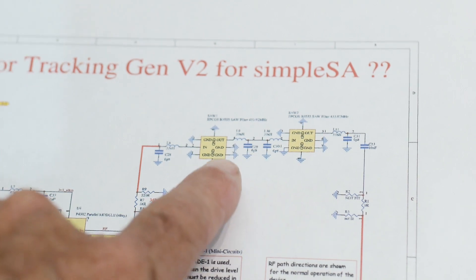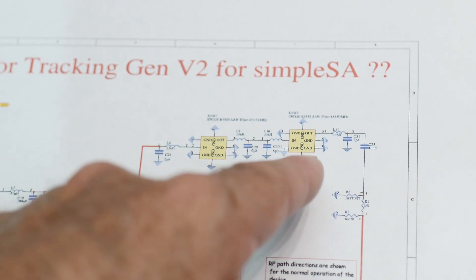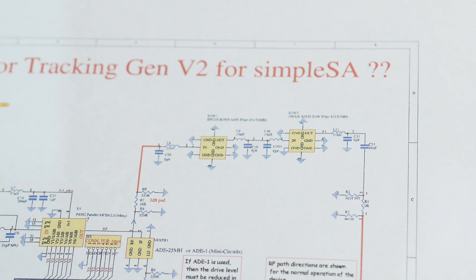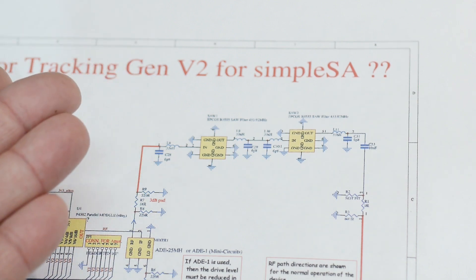In particular, the one I've been looking at lately is the tiny SA, and the tiny SA uses two filters back-to-back. So why would you do that? Why wouldn't you just buy a better filter or design a better filter?